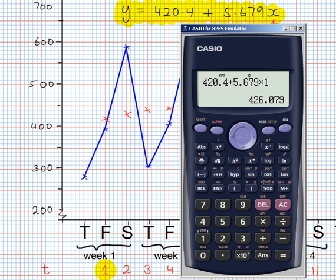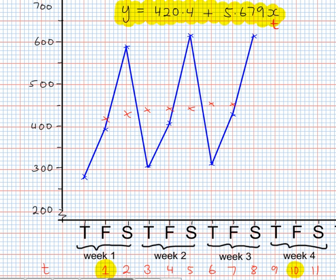So we need to plot that point on the graph, 426. So follow up from 1 to 400. That's 10, 20, 26 is about there. Okay, so there's my first point.